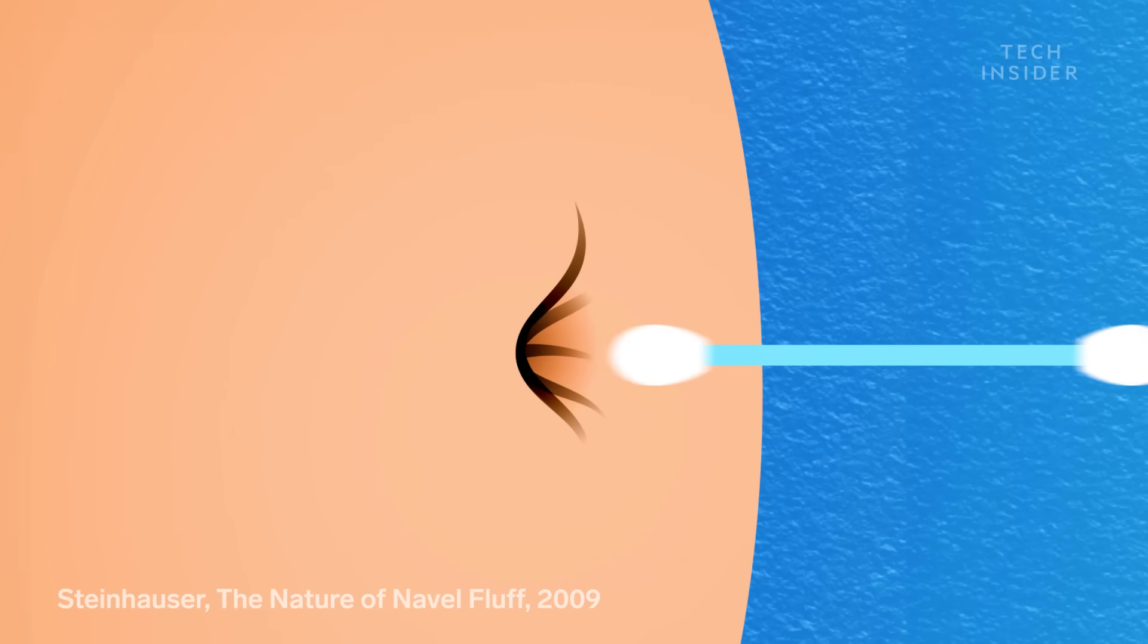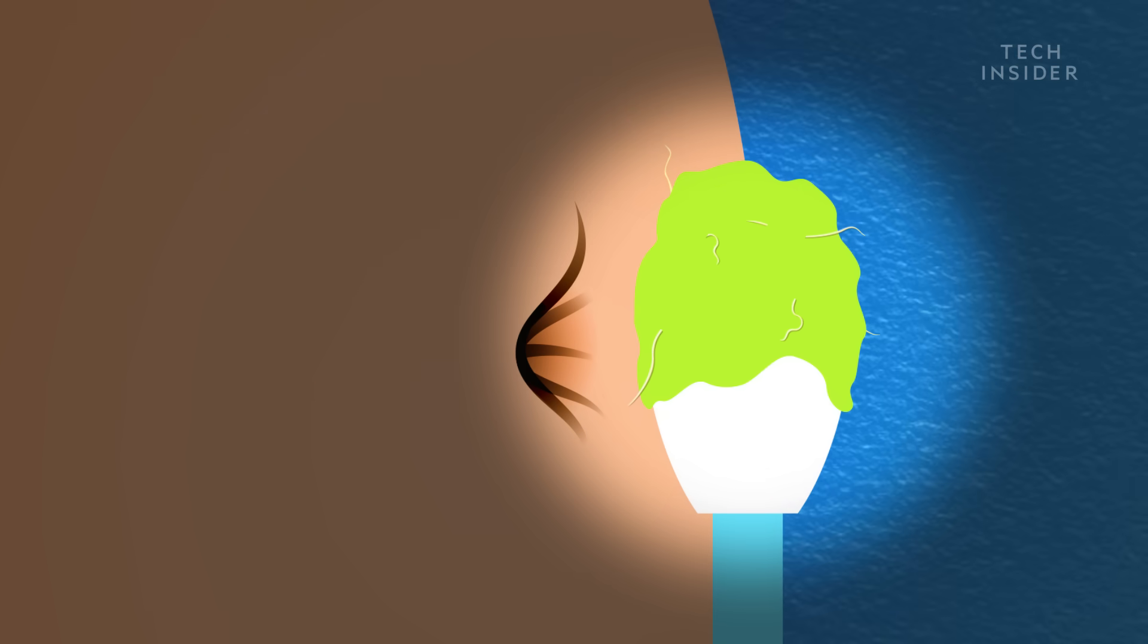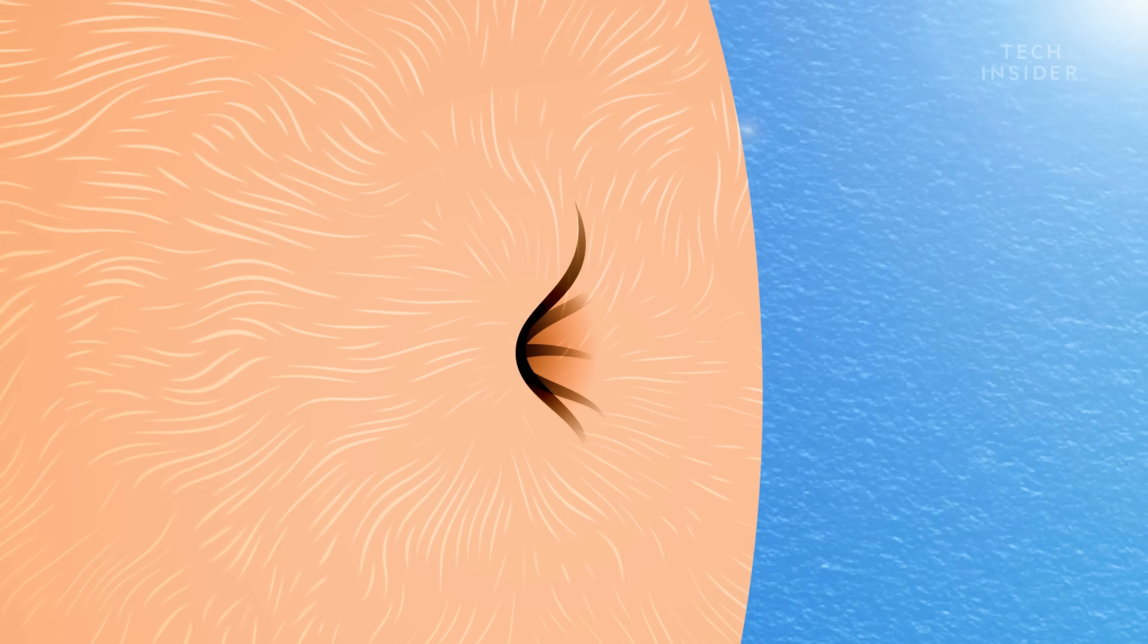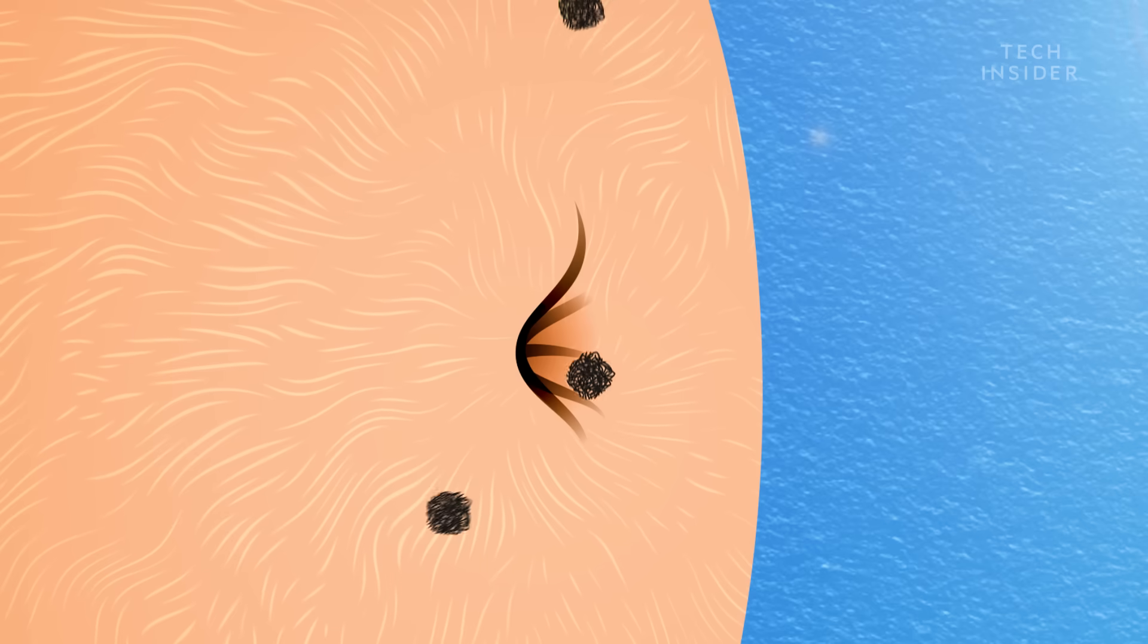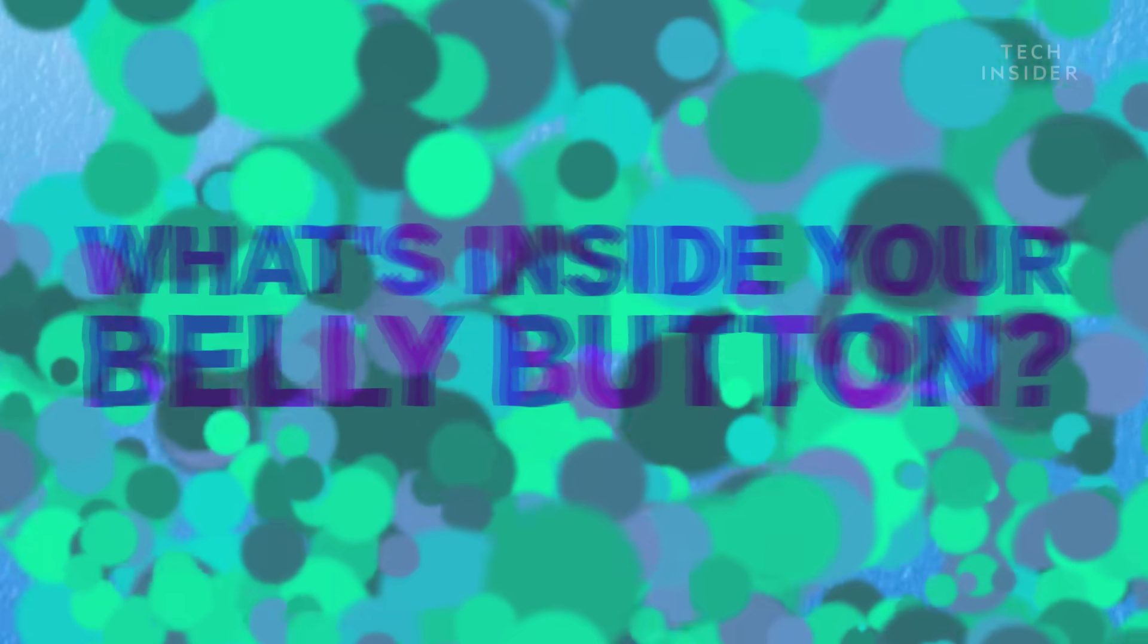And after interviewing friends and analyzing 503 of his own samples, Steinhauser discovered the culprit: stomach hair. It scratches off tiny t-shirt fibers and directs them towards the belly button. So that might be one mystery solved. But lint isn't the only thing inside these bizarre human crevices.